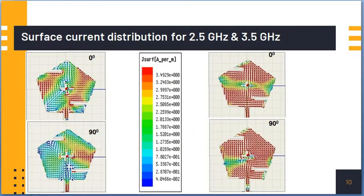These are the surface current distribution for 2.5 GHz and 3.5 GHz at 0 degrees and 90 degrees. The surface current density vector rotates in anti-clockwise direction, thus generating right-hand circular polarization.